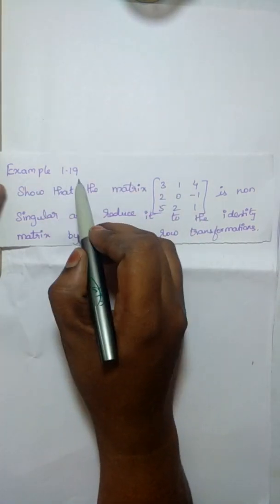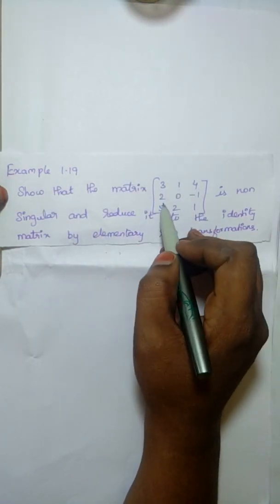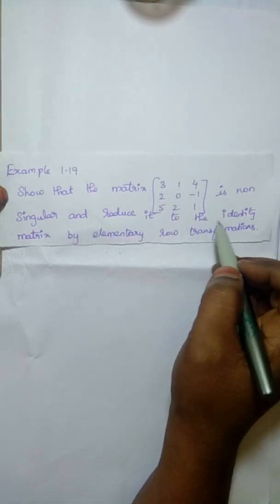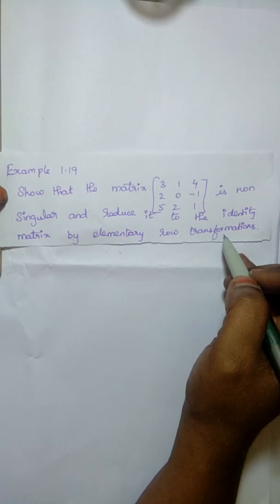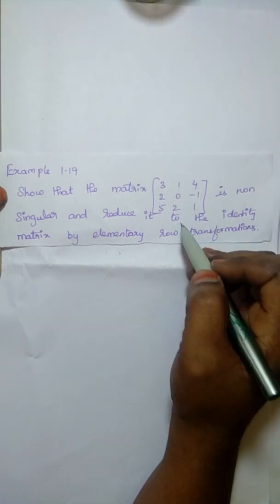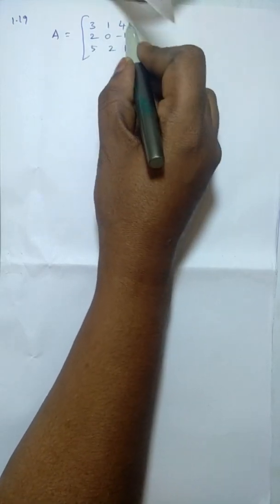Hi students! Example 1.19. Show that the matrix [3,1,4 / 2,0,-1 / 5,2,1] is non-singular and reduce it to the identity matrix by elementary row transformations. Now, take the given matrix as A. A is equal to [3,1,4 / 2,0,-1 / 5,2,1].